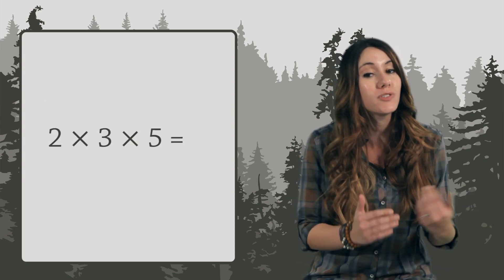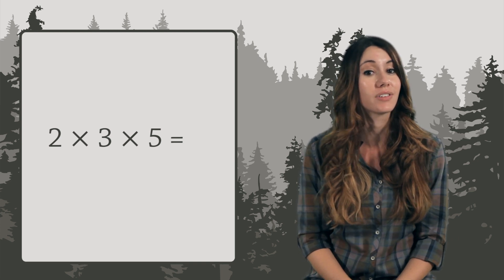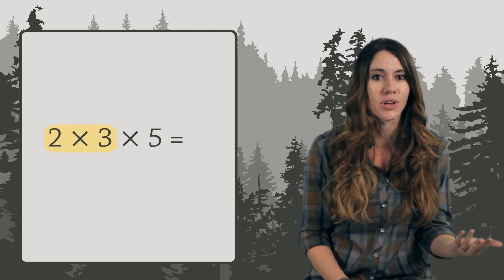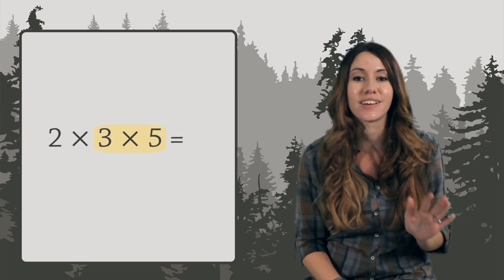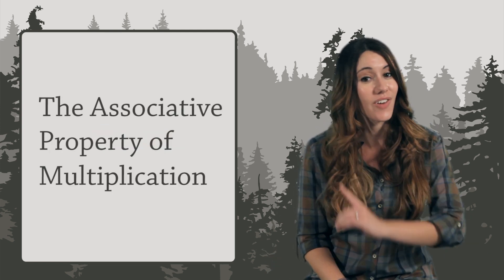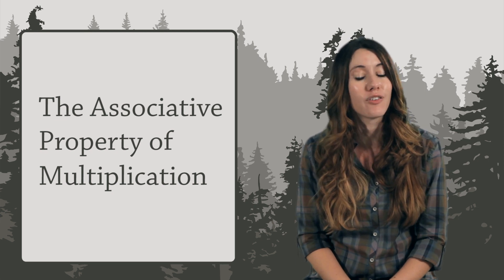Next, suppose you want to multiply 2 times 3 times 5. Do you start with 2 times 3, or do you start with 3 times 5? Again, the order doesn't matter. You will always get 30. This fact is called the associative property of multiplication.